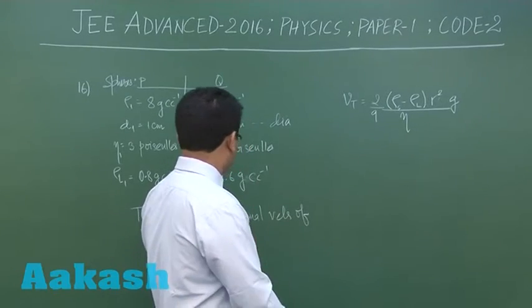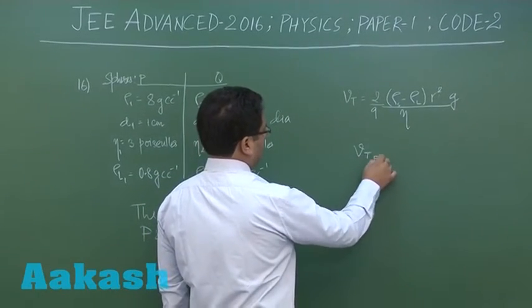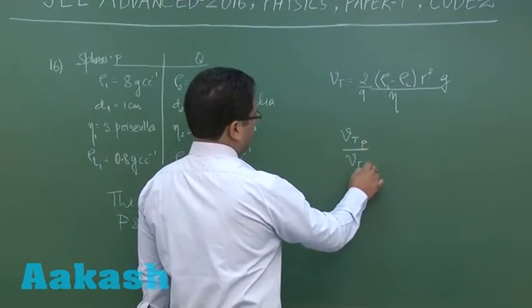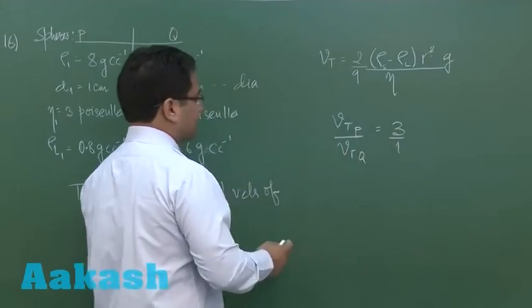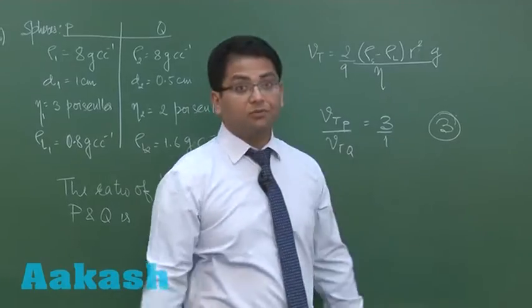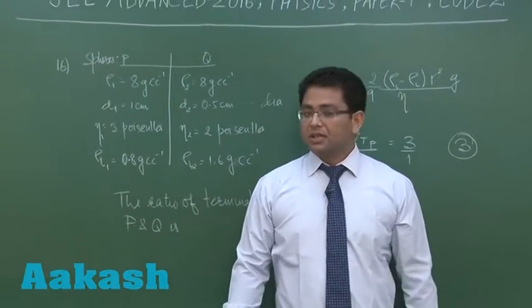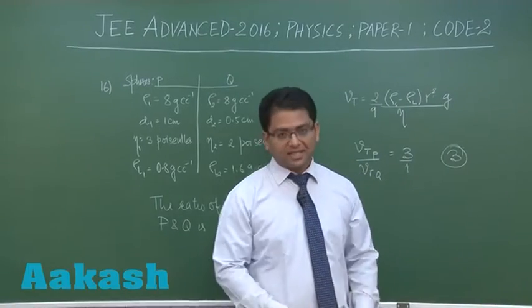Now it is all very simple. All you need to do is plug the value and do a slight bit of arithmetic, and that will give you 3 is to 1. And since it is an integer-based question, so 3 would be the integer that we would bubble upon. So that was question number 16. Now we will move to question number 17.